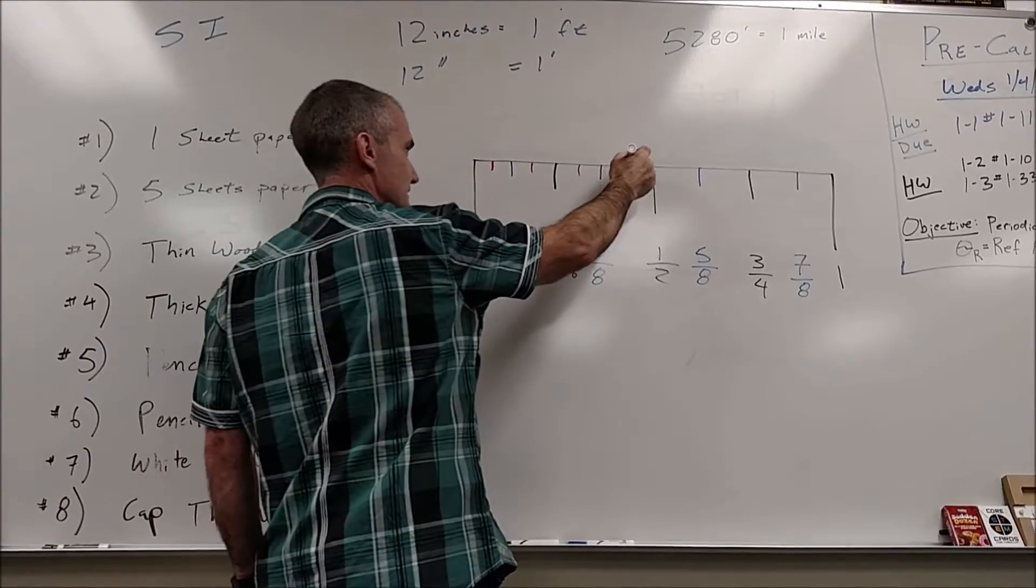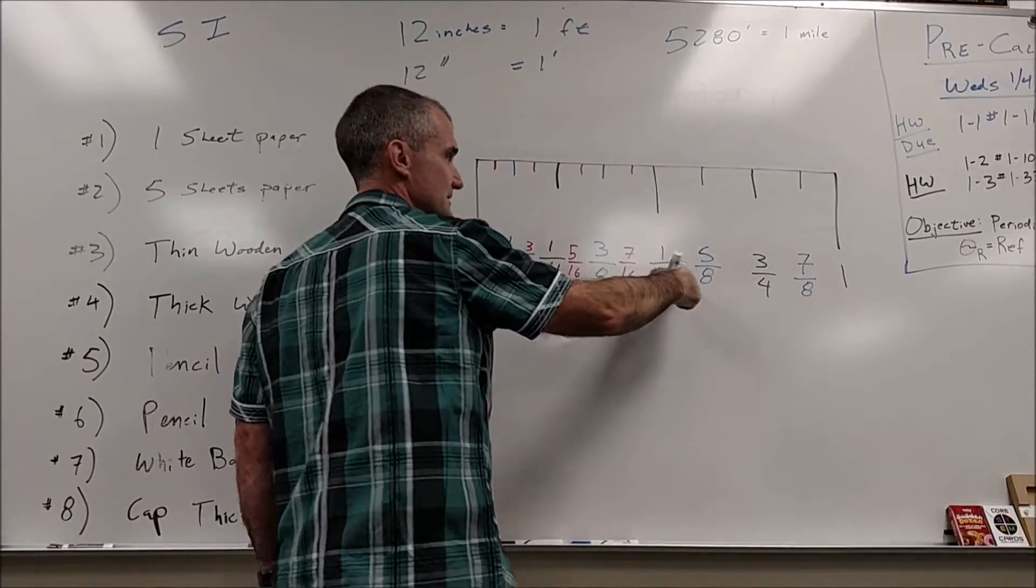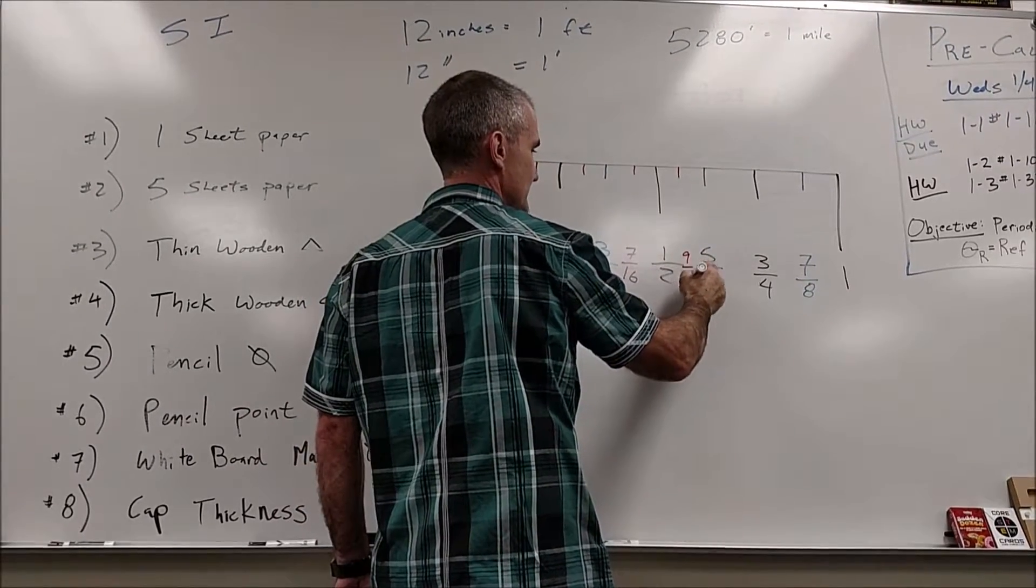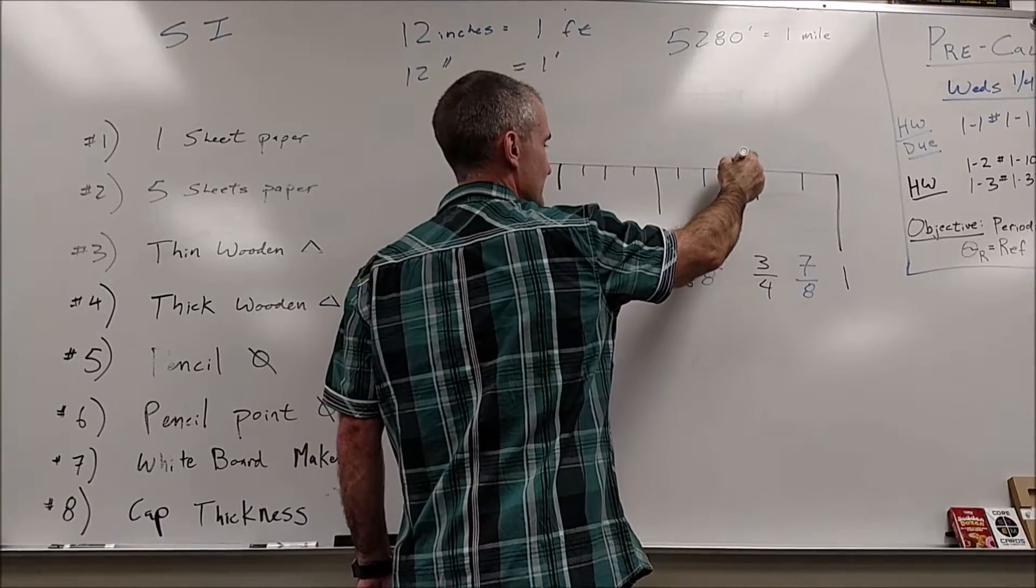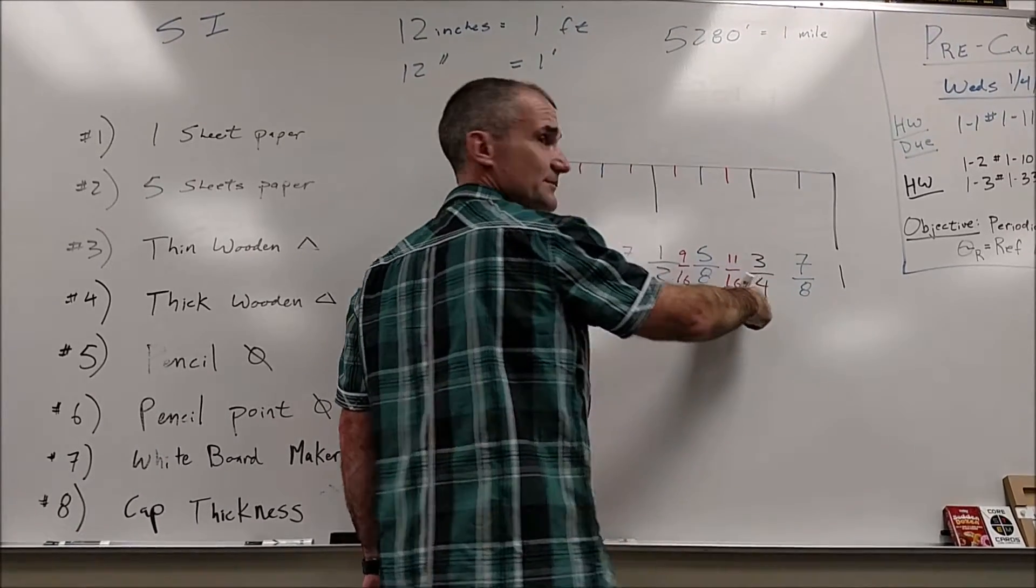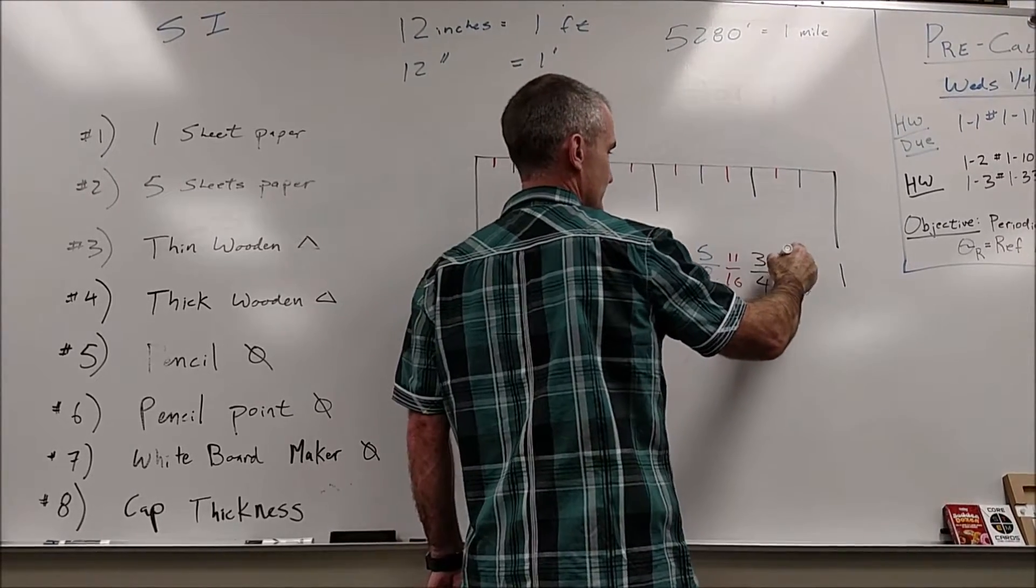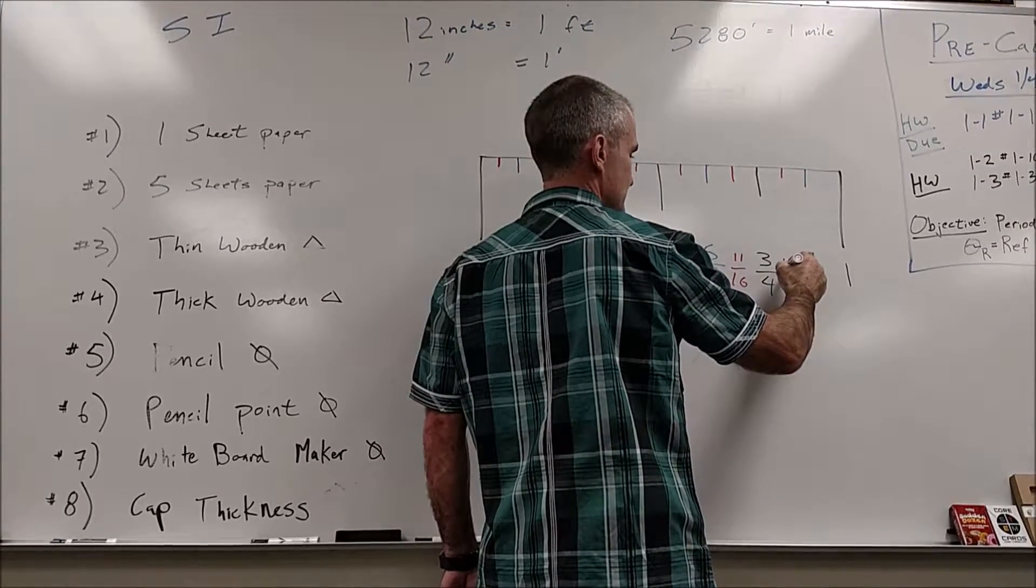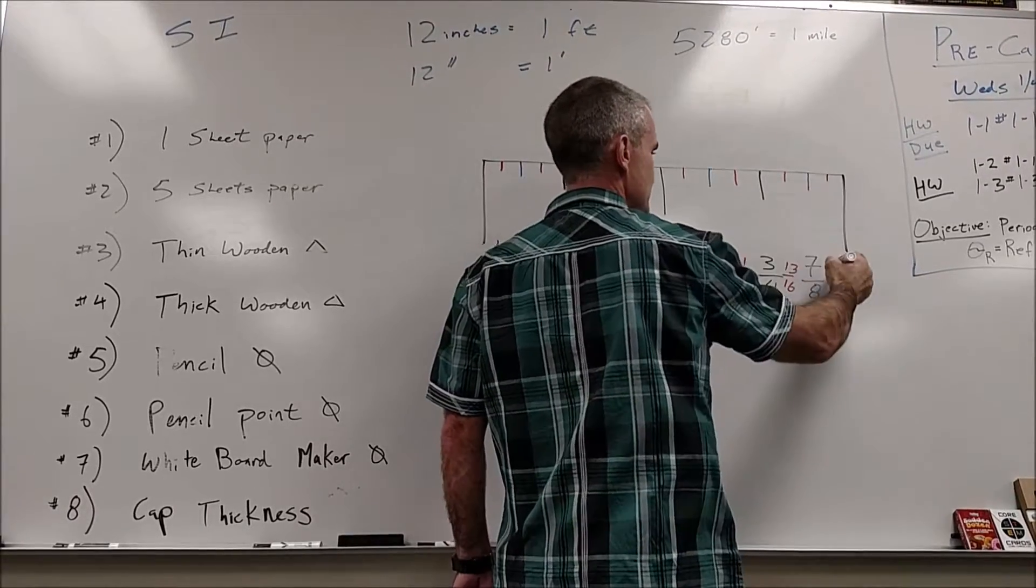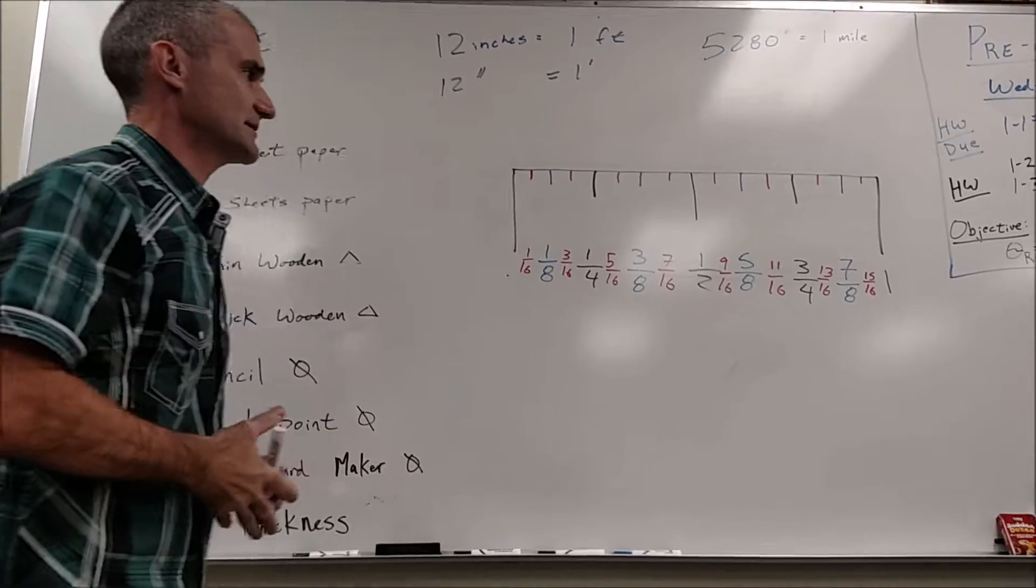Six sixteenths. Jake? Seven sixteenths, eight sixteenths. Abby? Nine sixteenths, ten, eleven sixteenths, twelve sixteenths. Will? Thirteen sixteenths, fourteen sixteenths, fifteen sixteenths, and then up to sixteen sixteenths.